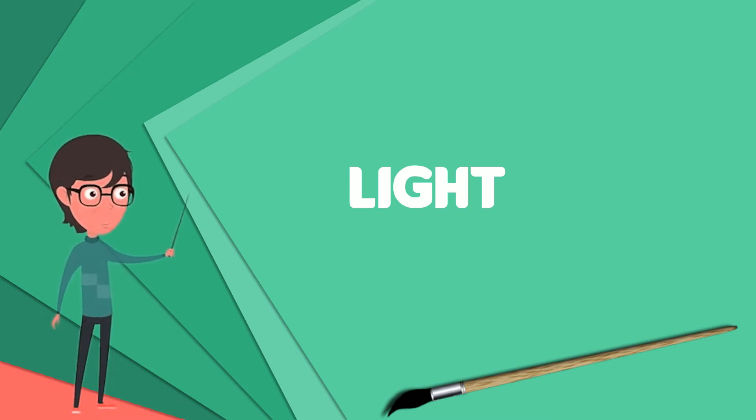Some species of animals generate their own light, a process called bioluminescence. For example, fireflies use light to locate mates, and vampire squids use it to hide themselves from prey.